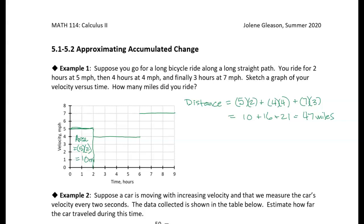Then we look at the second period of time here. We went for four hours at four miles per hour. And so you can see that the area under the graph here is just four miles per hour times four hours, and we get 16 miles.